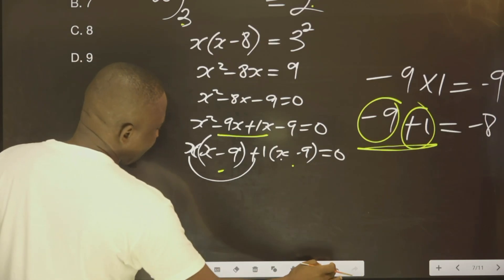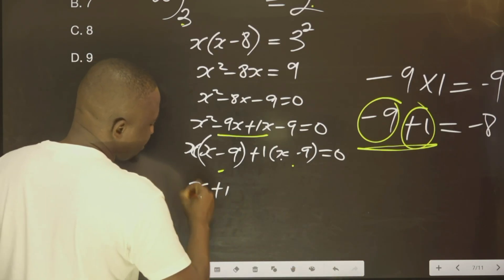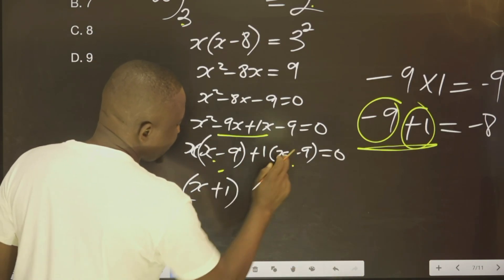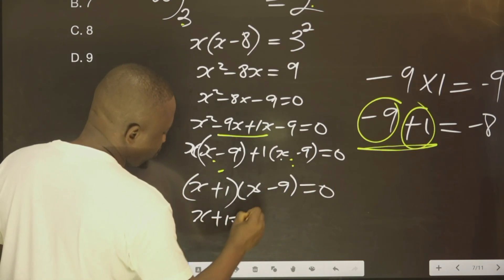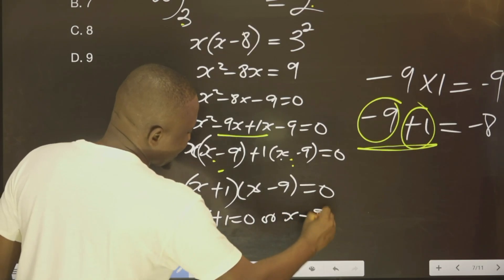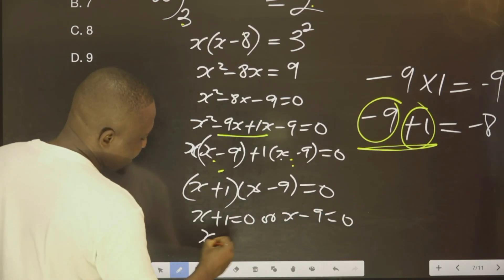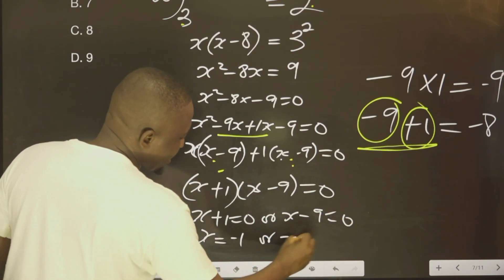So that is, this and this will come together. x plus 1. Then you take one of these, x minus 9, equal to 0. That is, x plus 1 equals to 0, or x minus 9 equal to 0. x equals to minus 1, or x equals to 9.